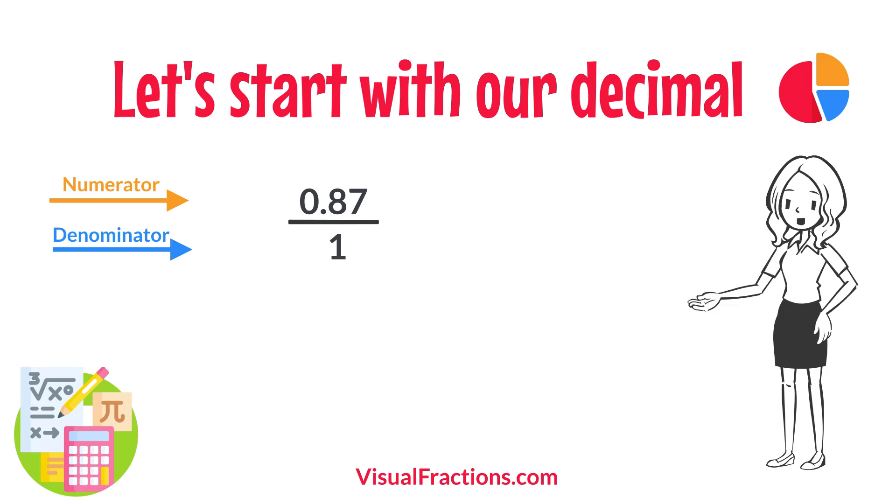This sets up the conversion process where we multiply both the numerator, the decimal, and the denominator, one, by 100 because there are two decimal places.